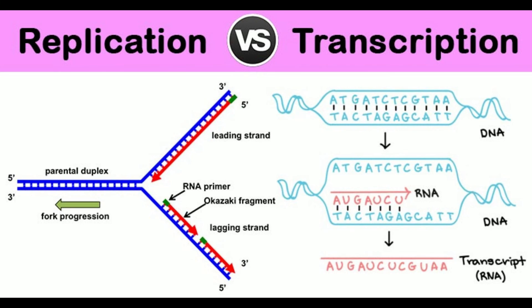19. Migration from site of formation: DNA replication products remain within nucleus. Greater part of transcription products pass from nucleus into the cytoplasm.